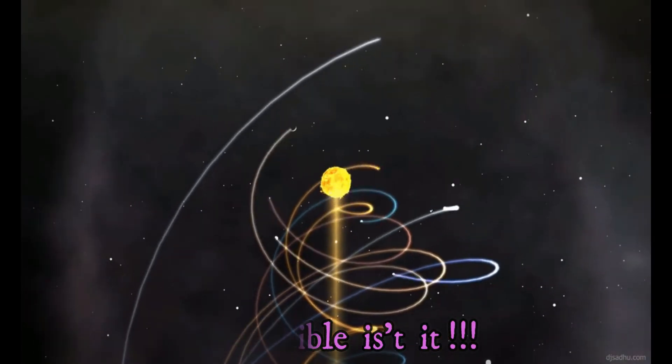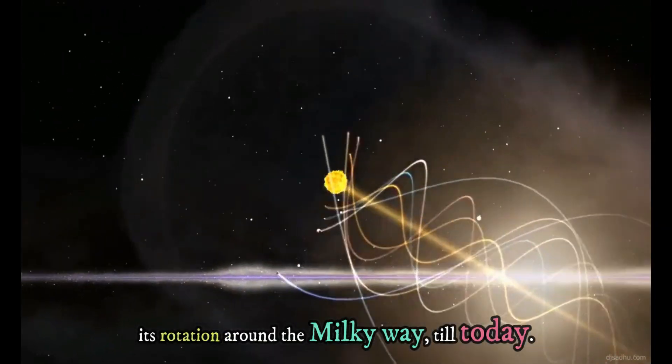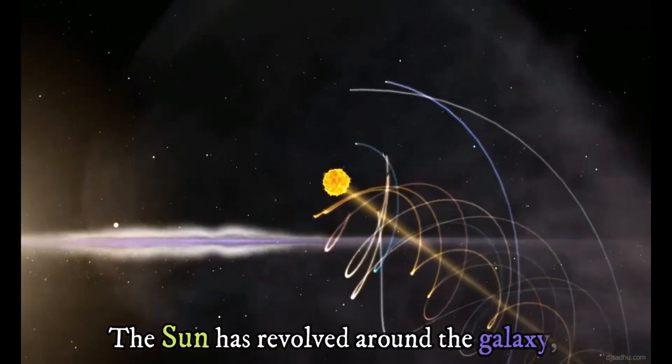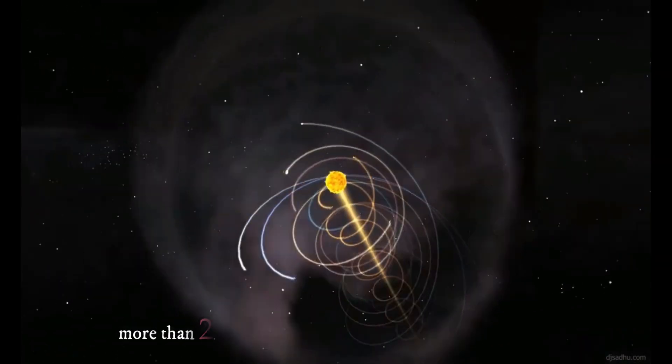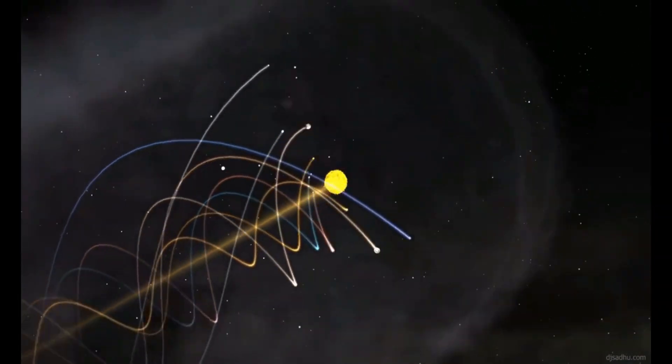Do you know how many times the Sun completed its rotation around the Milky Way till today? The Sun has revolved around the galaxy more than 20 times during its 5 billion year lifetime.